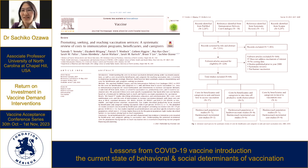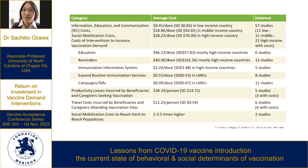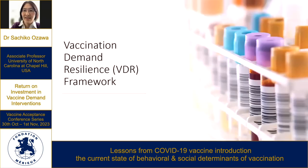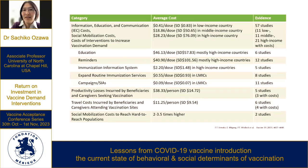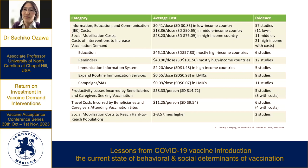We also conducted a systematic review on the beneficiary side — the costs for beneficiaries and caregivers to reach vaccination sites. The major cost categories included IEC costs, social mobilization costs, cost of interventions to increase vaccination demand, productivity losses, and travel costs incurred for beneficiaries. We found that social mobilization costs to reach hard-to-reach populations were about two to 3.5 times higher than for easier-to-reach populations.